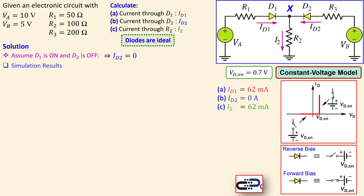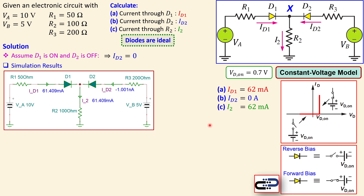We now look at the simulation results as a summary for questions A, B, and C. In the TINA-TI simulator, we have D1, D2, the two sources VA and VB, and the resistors. The simulated current is 61.41 mA compared to our calculated 62 mA — a small difference of about 0.6 mA. The current through D2 is essentially zero at minus 1.001 nanoamps, confirming D2 is off, and ID1 equals I2.